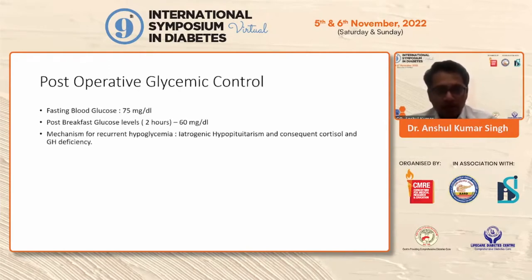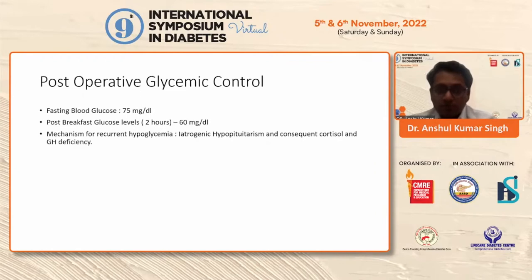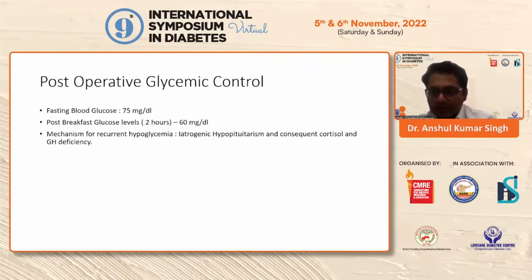Post-operatively, on the third or fourth post-op day, the patient started experiencing hypoglycemic episodes, and this was off medications. This was because post-surgery, the patient developed iatrogenic hypopituitarism. There was hypocortisolism, and along with the decline in growth hormone levels, this led to a situation where the patient was developing recurrent hypoglycemic episodes.